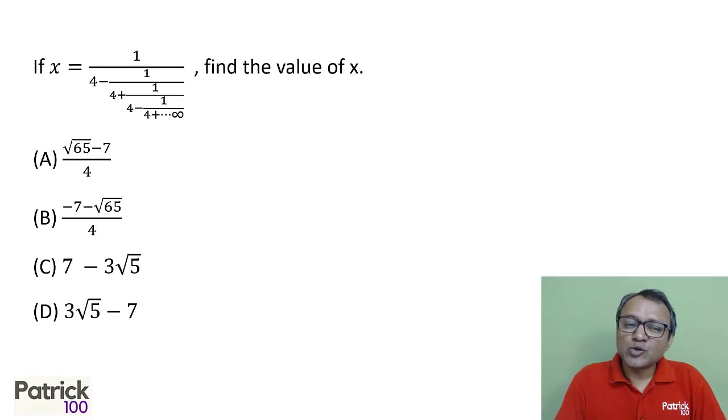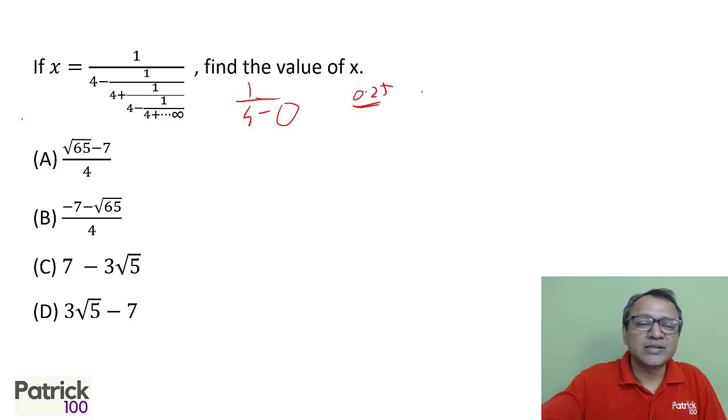Normally in such kind of sums, if you try to solve using x, it takes a longer time. You can always approximate if the options are far. Let's look at how to approximate. If you look at this, approximately 1 upon 4 minus some small value. I'm just taking it as 1 upon 4, that is 0.25, it will be slightly more than around 0.25.